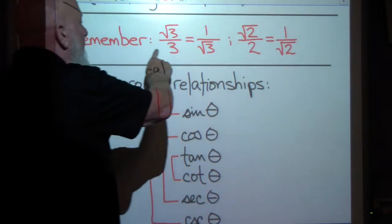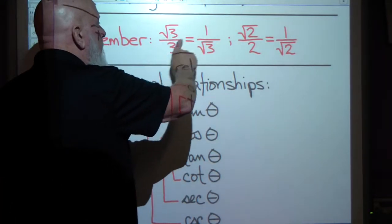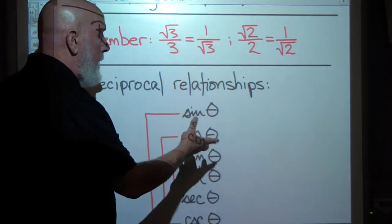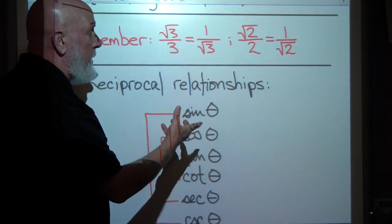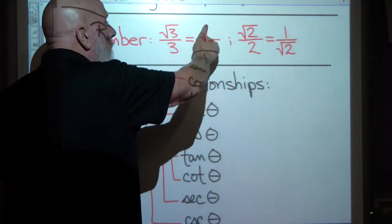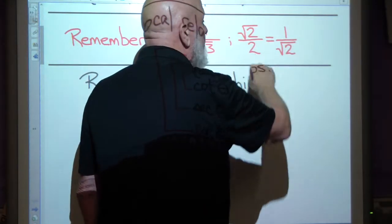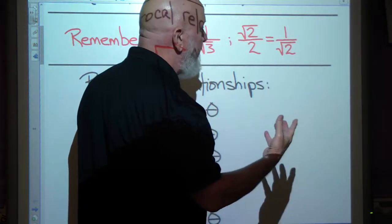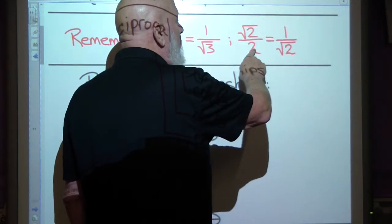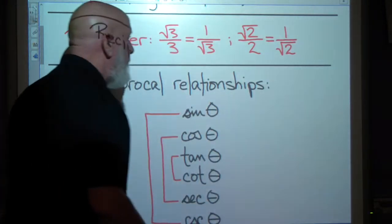We're going to remember that if we run into radical 3 over 3, that's the same thing as 1 over radical 3, within the context of a 30-60 right triangle. Likewise, in the context of a 45-45 right triangle — one of the special case triangles — if we run into radical 2 over 2, we think 1 over radical 2.